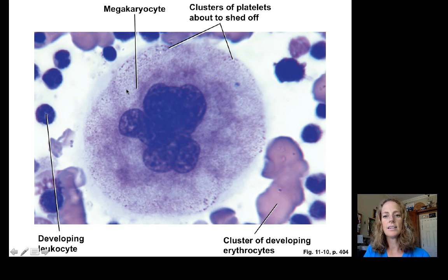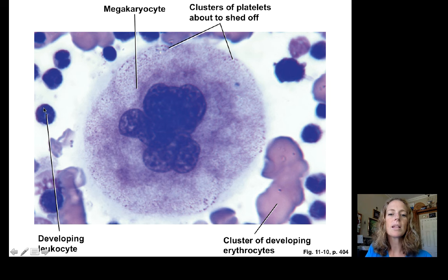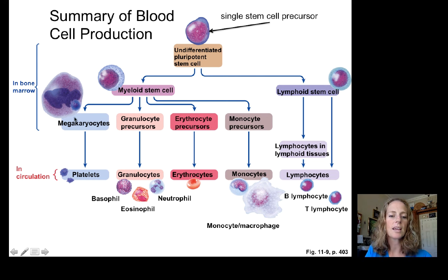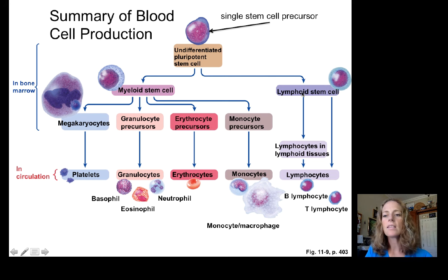Here is a megakaryocyte — a giant cell — with little chunks of platelets about to break off. There are clusters of developing red blood cells, clusters of developing white blood cells, and platelets being released. As a summary, all blood cell production takes place from stem cells in the bone marrow. Myeloid stem cells produce megakaryocytes, granular white blood cells, and monocytes; lymphoid stem cells produce B and T cells.